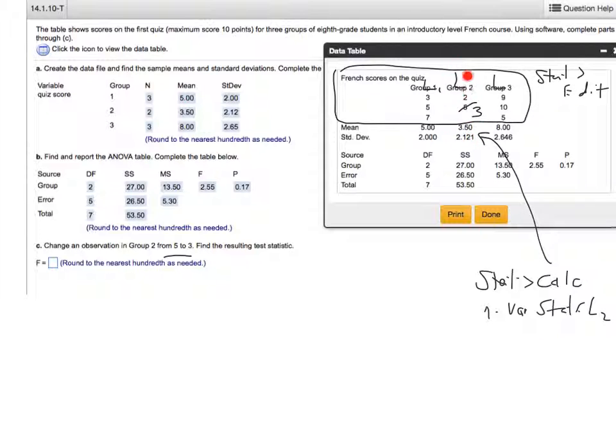That can only change the second group information as far as the mean and standard deviation goes. If you want to see how that changes, do stat calc and one var stats L2. The new mean obviously is just 2.5, and the standard deviation will get smaller because there's less variation between these two.